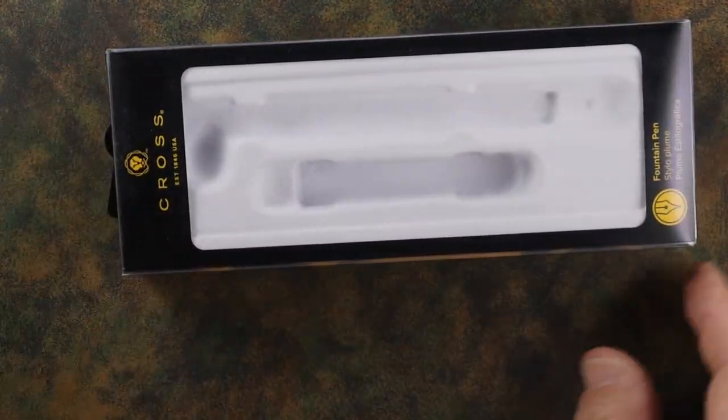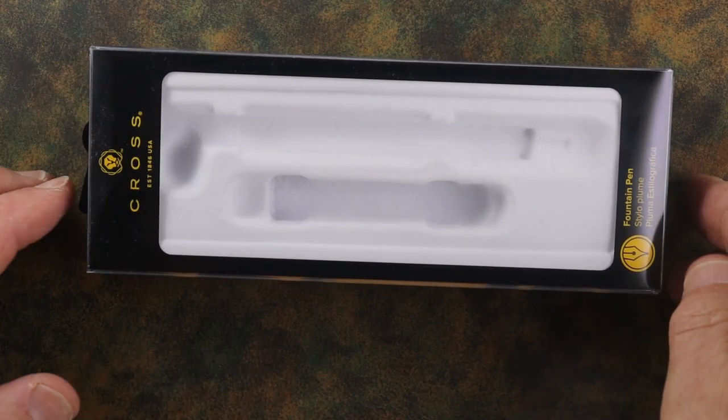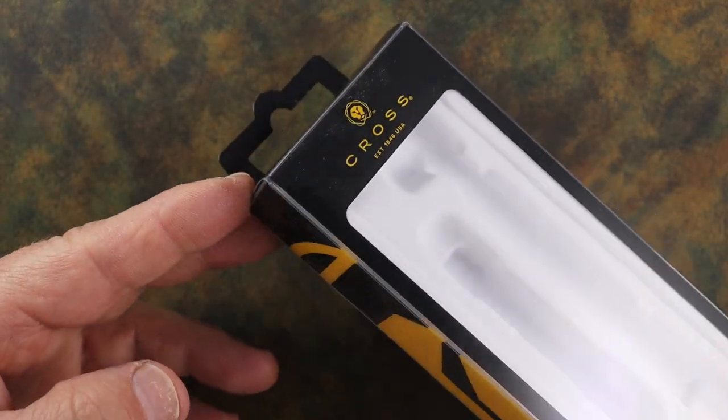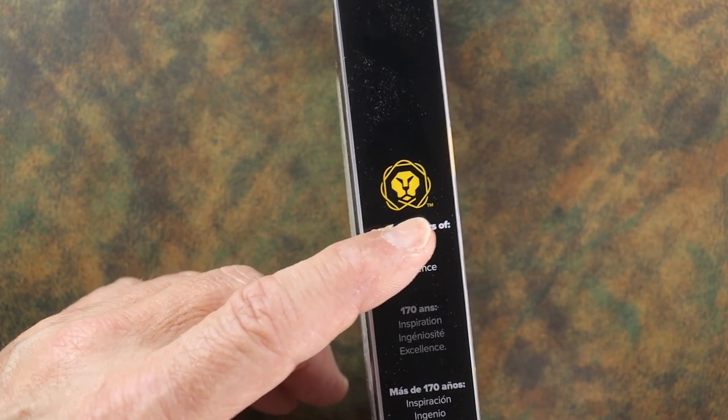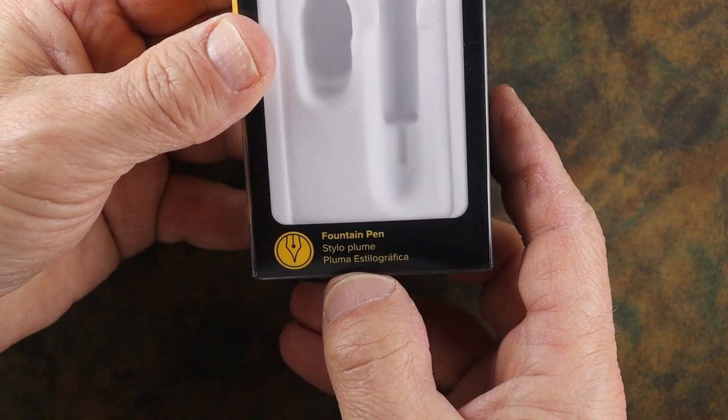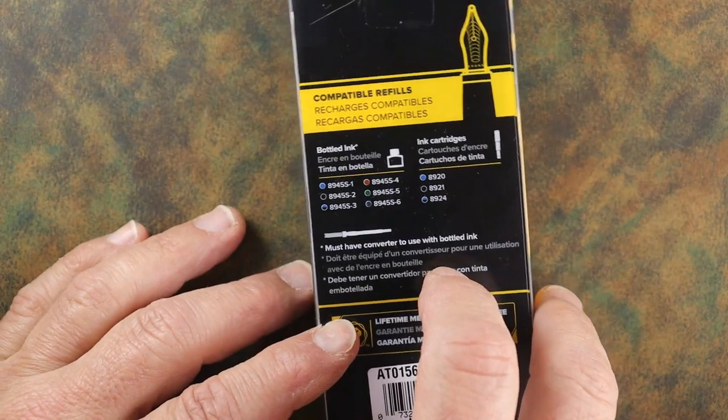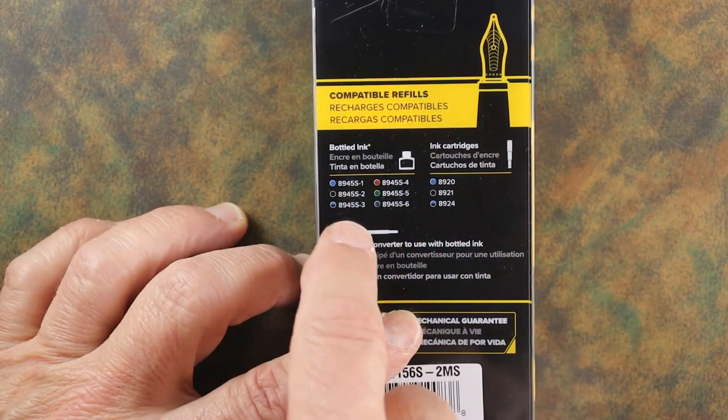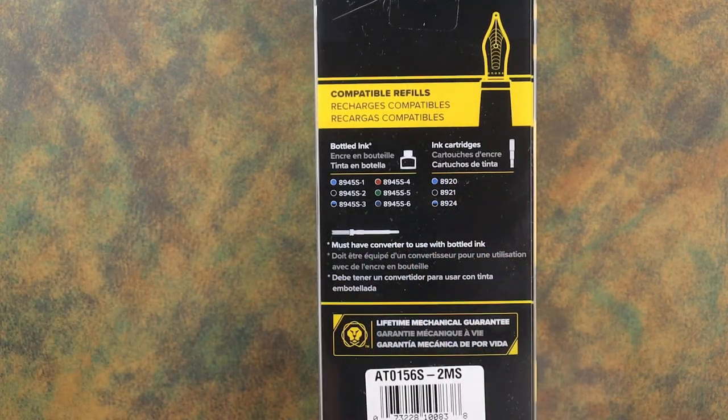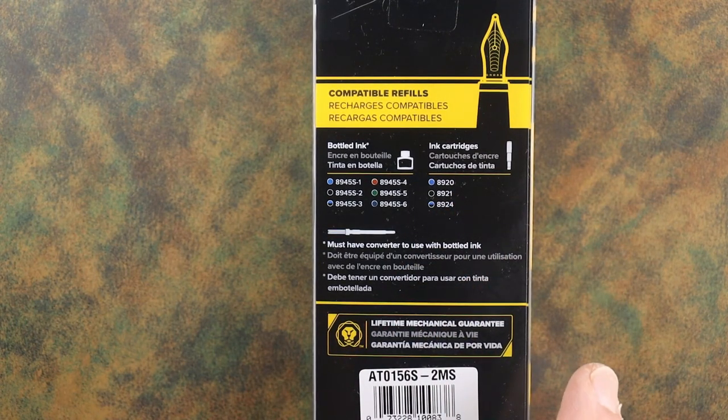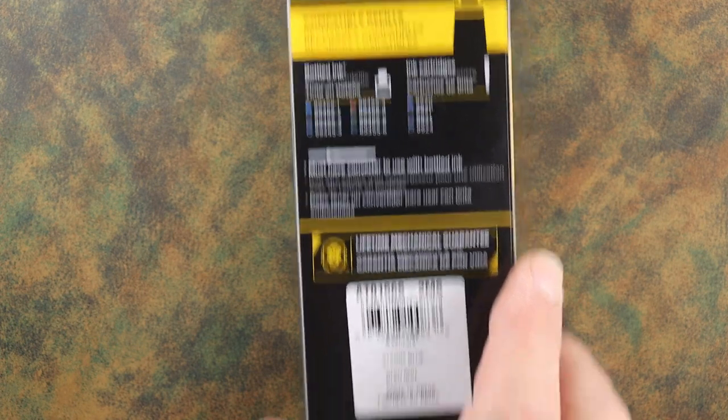First off, the Cross Adventure comes in this kind of retail style packaging where you put it on the hooks. There's a lion's head that's on the nib as well. It says fountain pen on the back and gives some instructions for the ink cartridges and bottled ink. If you're looking at ink cartridges, you want to make sure that you get one of these styles compatible to those numbers because they are proprietary. It's just a basic retail packaging.